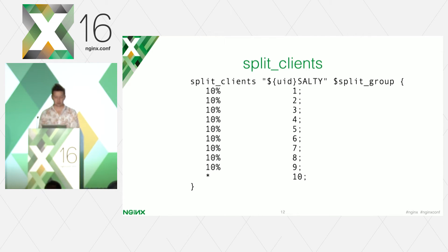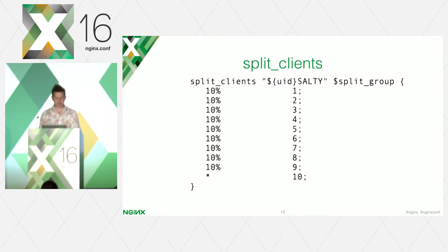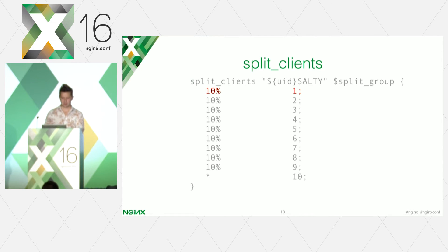Now that we know how to assign a unique identifier to visitors, it is time to split them into groups. The main job of splitting is done by the split_clients module. Internally it takes a hash of the passed parameter and takes a numeric representation of the hash — the algorithm used is murmur hash. In the split_clients directive we pass the resulting UID, a salt, and also the name of the variable that will receive the value of the group. Inside the directive we specify the distribution — the percentage from hash by UID and the value of the group corresponding to this percentage.